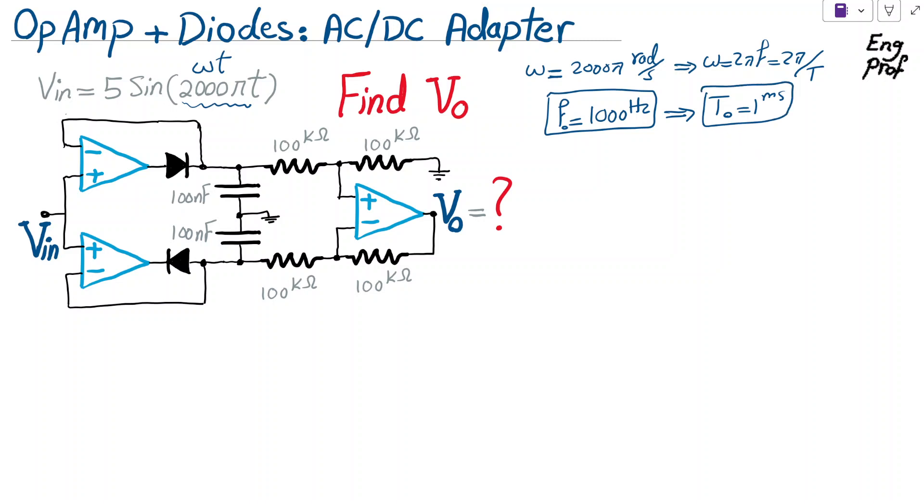With that in mind, at the beginning, we make the assumption that these two caps shown here, these 200 nanofarad caps, are discharged, and there is no charge in them. So in the first, take a look at this. This is time, this is V in, so it's 5 sin(ωt), so the peak value of sine is 5, and the negative peak is negative 5, and the whole time it takes is 1 millisecond, so half period here is 0.5 millisecond. So in the first 0.5 millisecond, and till the first peak, you have 0.25 millisecond.